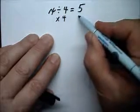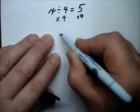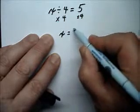If we do it to this side, we have to do it to the other side, and that way we get x equals 20.